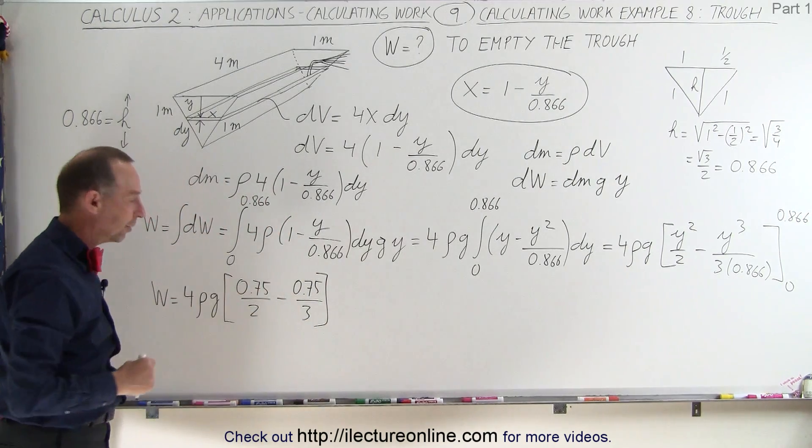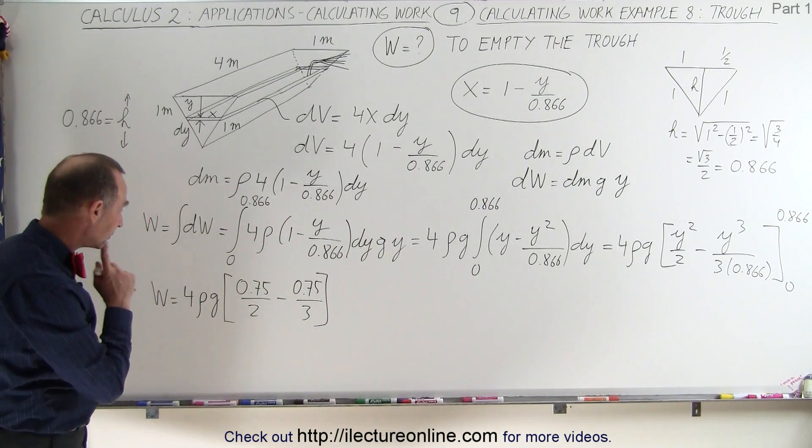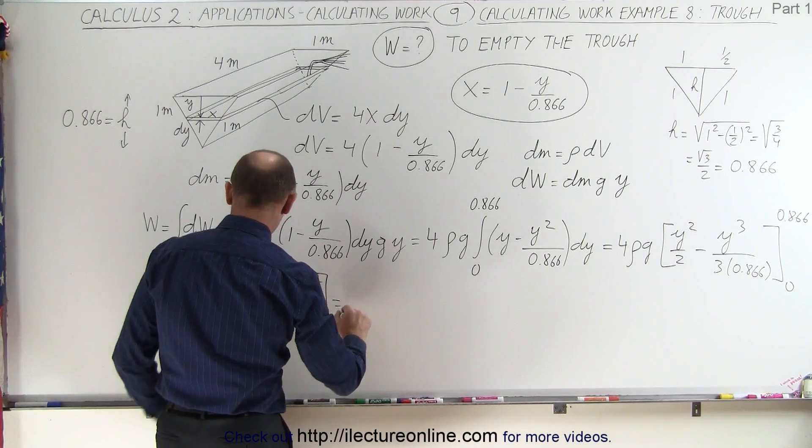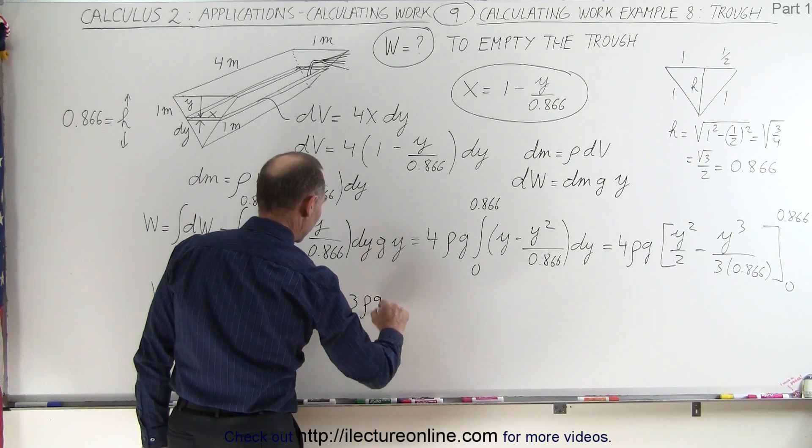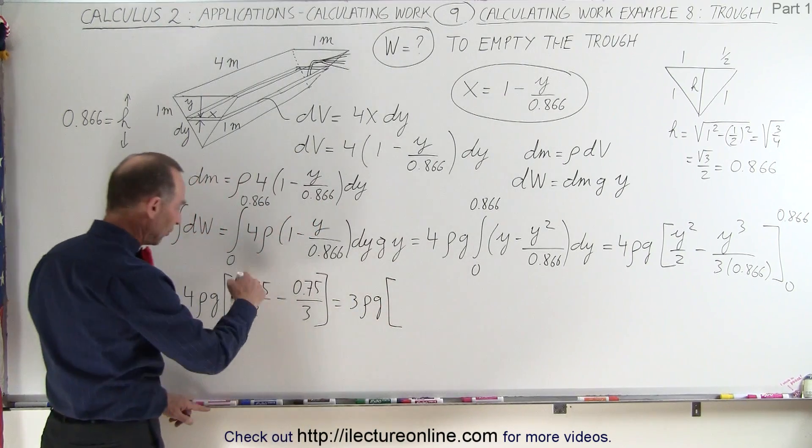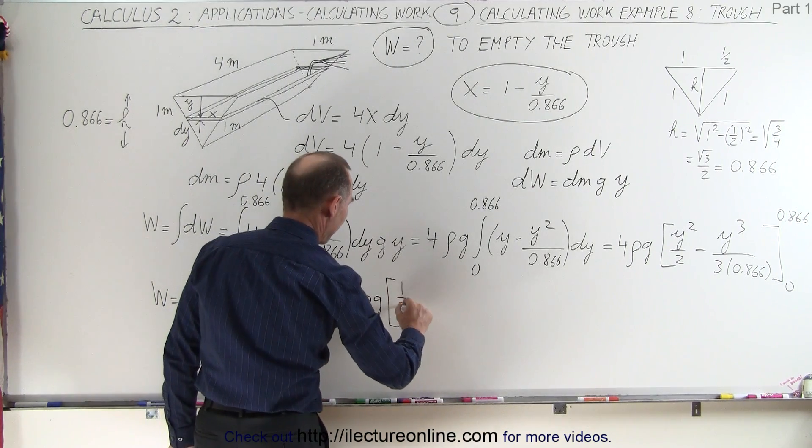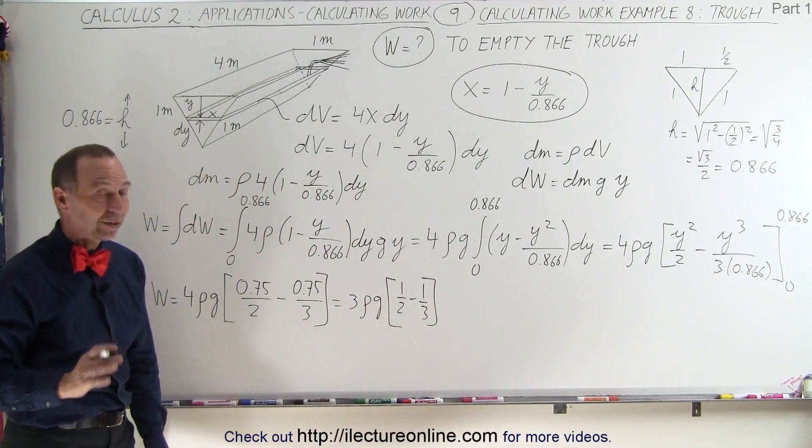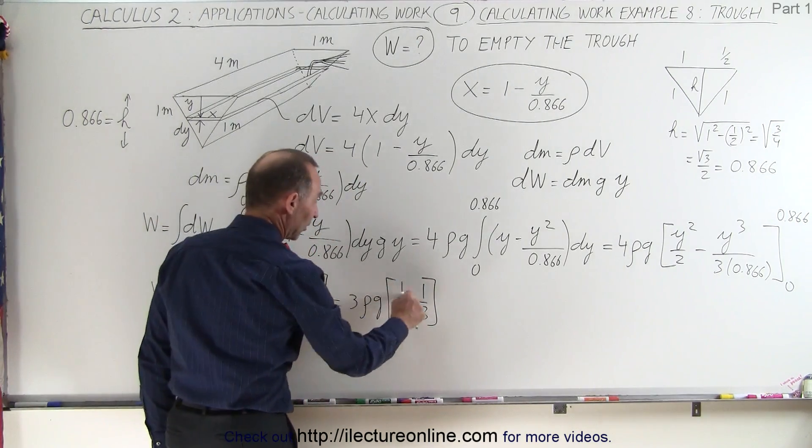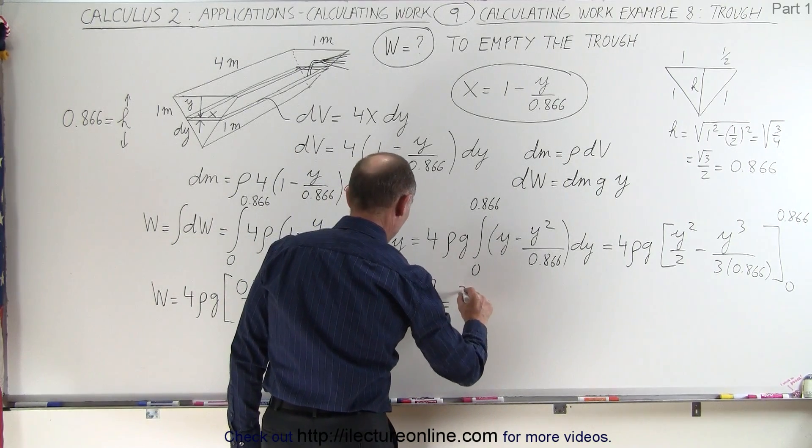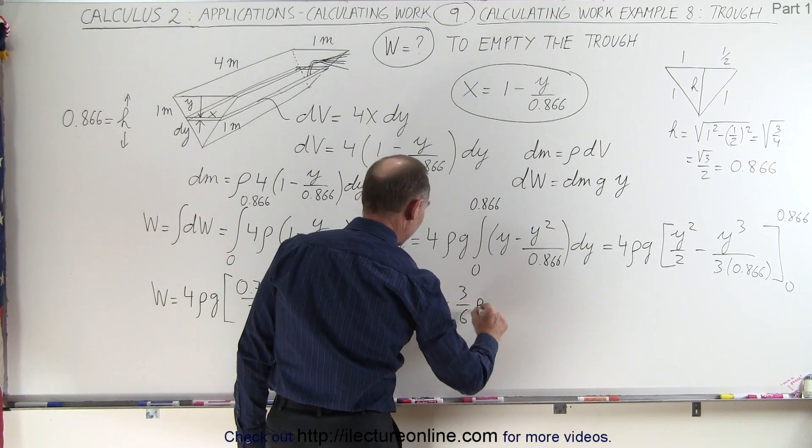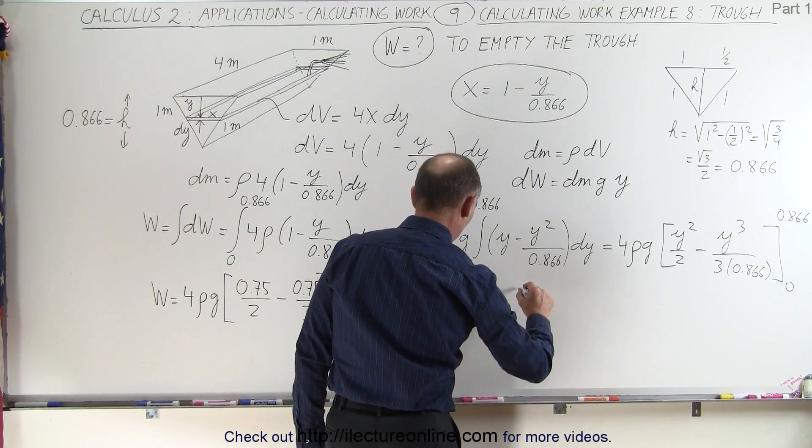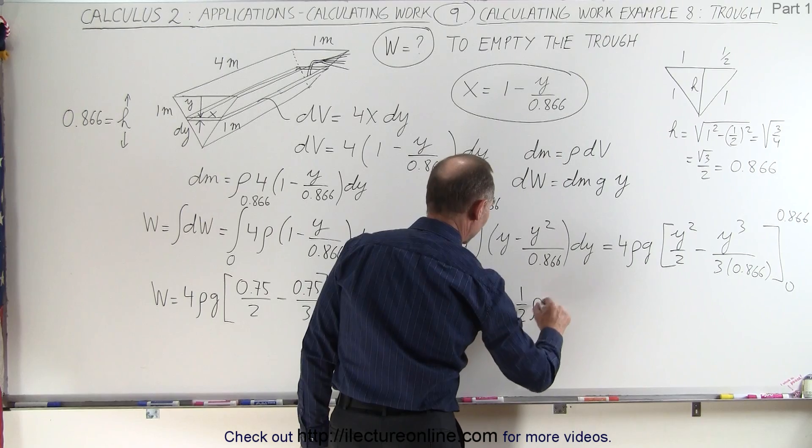So notice I can pull out the 0.75. 4 times 0.75 is 3. So this is equal to 3 times the density times g times what we have left is 1 half minus 1 third. And 1 half minus 1 third is 1 sixth, because this is 3 sixths minus 2 sixths, which is 1 sixth. So this would be 3 divided by 6 times the density times g. And 1 sixth of 3 is, of course, 1 half. So it's 1 half times the density times g.